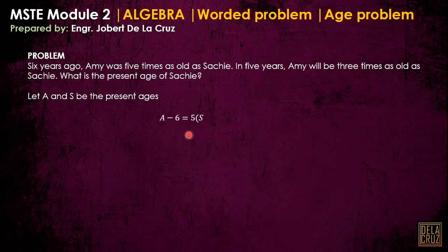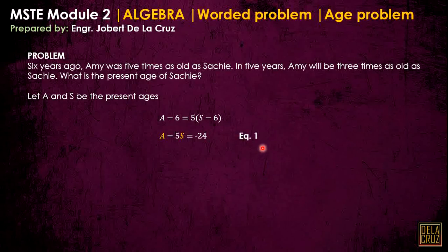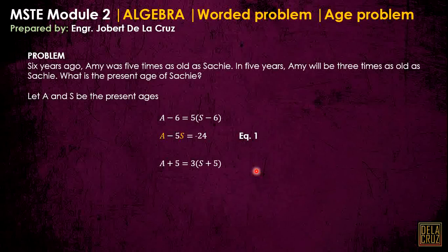Six years ago, the age of Ami is A minus 6. Ami was five times as old as Sachi, so that's the age of Sachi six years ago also. It says this age of Ami at that time is five times the age of Sachi at that time. I rearrange this into equation one. For the next statement — in five years, meaning present age plus five years — the age of Ami will be A plus 5, and Sachi's age will be S plus 5. It says this age will be three times Sachi's age at that future time. I rearrange into equation two.